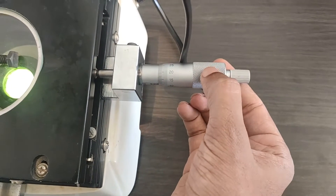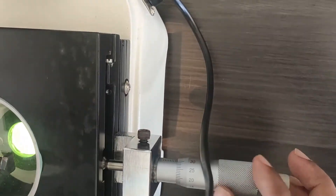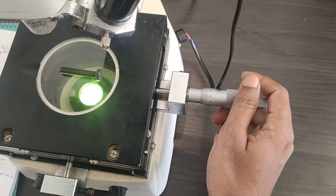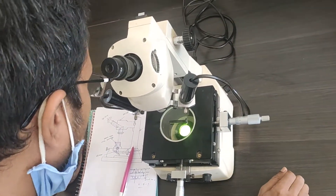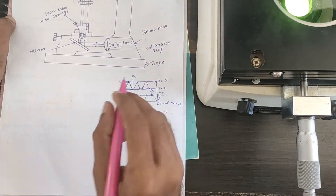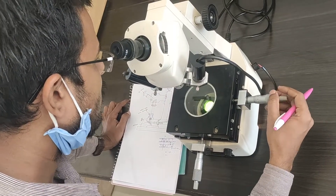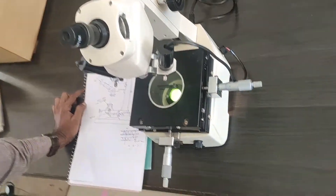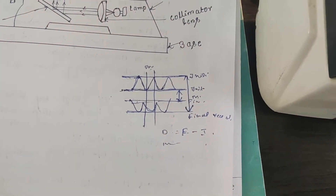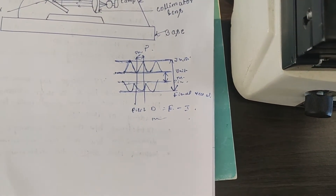To find the pitch of the thread, use the vertical micrometer — its least count is also 0.01 mm. Adjust the vertical line to the center of one thread and take the initial reading. Then adjust the vertical line to the center of the next consecutive thread and take the final reading. Final minus initial gives the pitch of the thread.